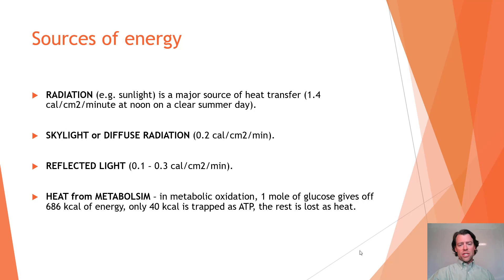Heat from metabolism is another significant source. Metabolic oxidation of one mole of glucose gives off about 686 kcal of energy, but only 40 kcal is trapped as ATP — the rest is lost as heat. So some vertebrates have the ability to generate their own heat and stay warm through metabolic heat production.